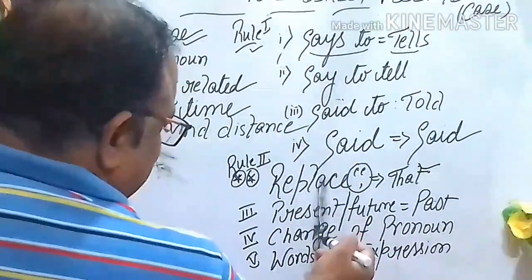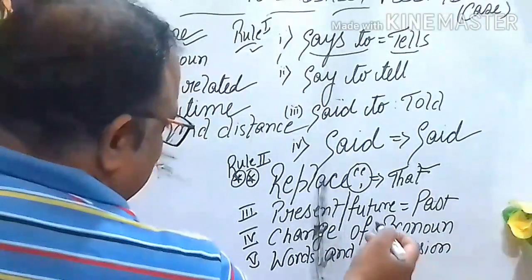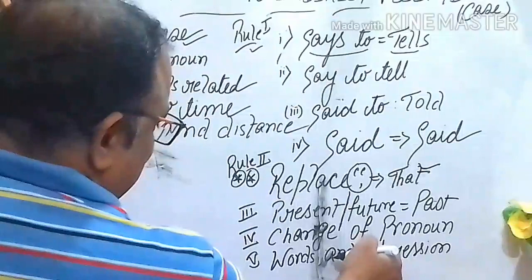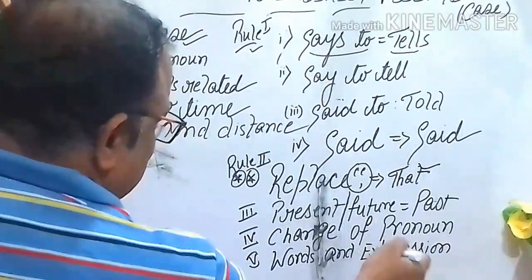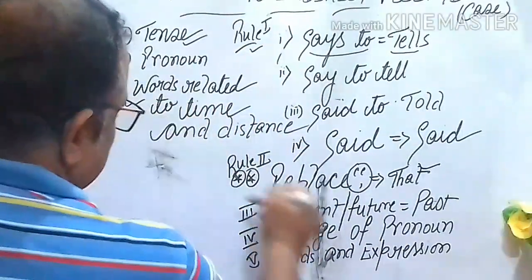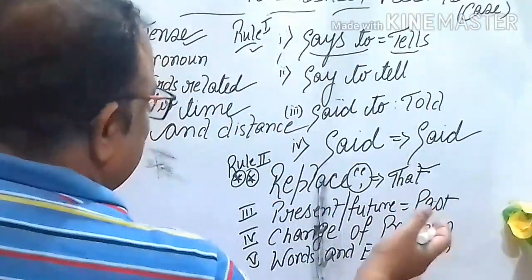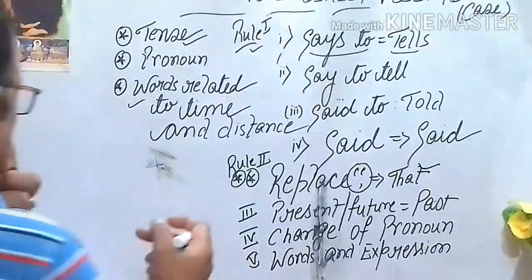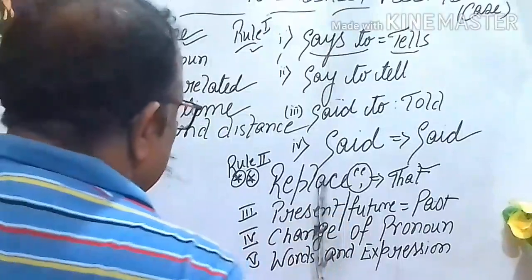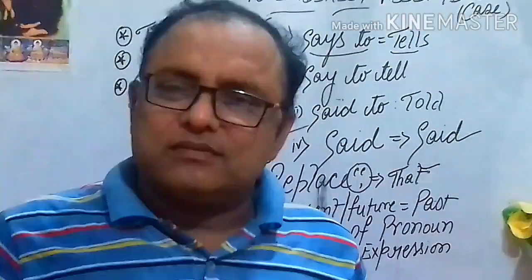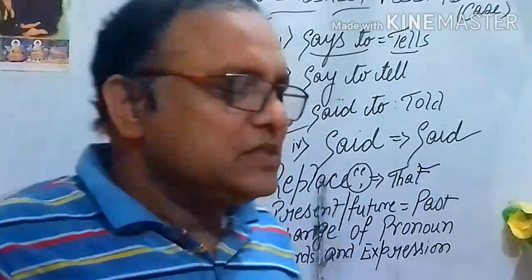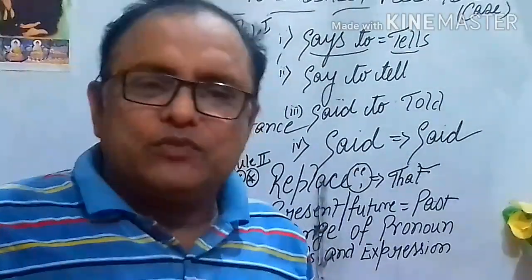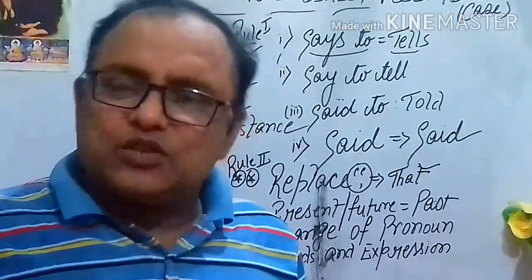We also take care of the change of pronoun. Then we take care of change of time and distance-related words — like 'tomorrow' becomes 'the next day', 'today' becomes 'that day', and so on. All these things have already been discussed in my narration Part 1 and Part 2 videos. Today I will simply focus on conversion of assertive sentences into indirect speech.